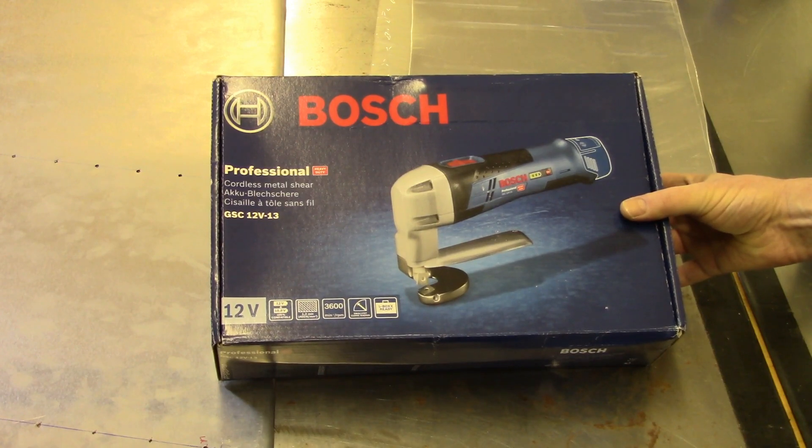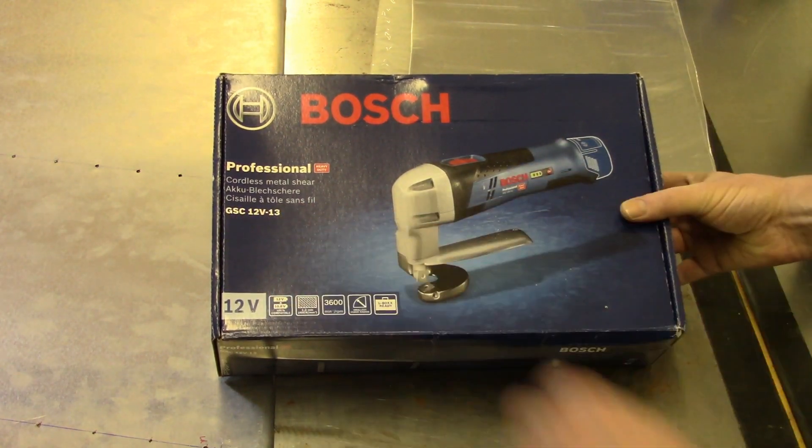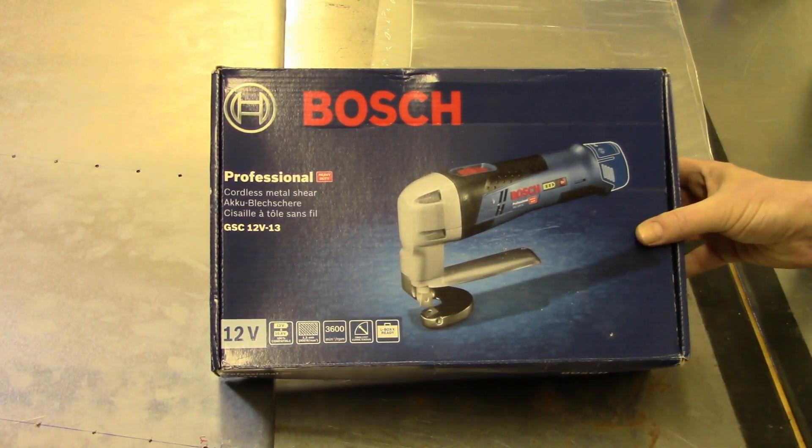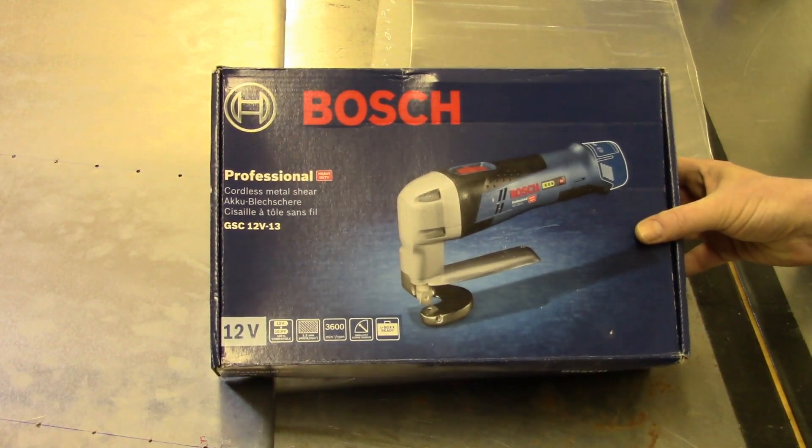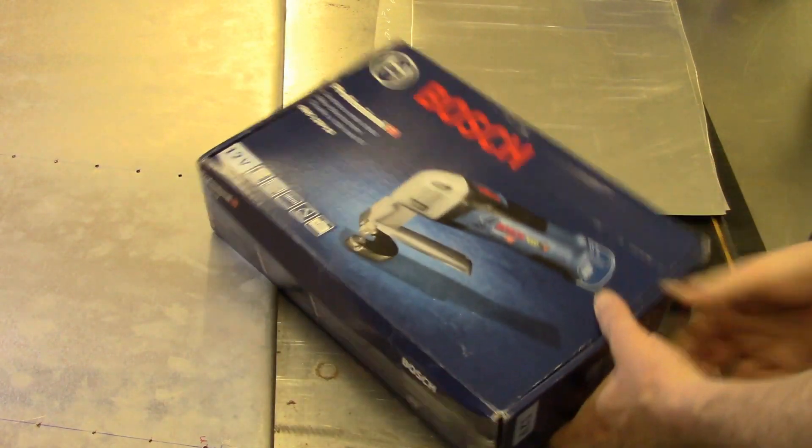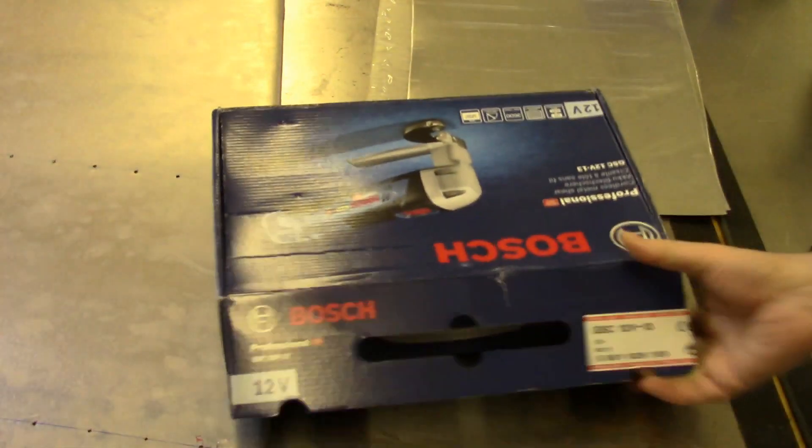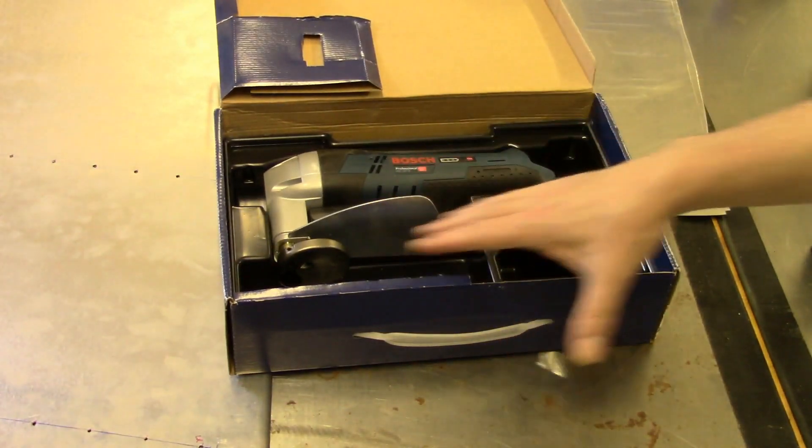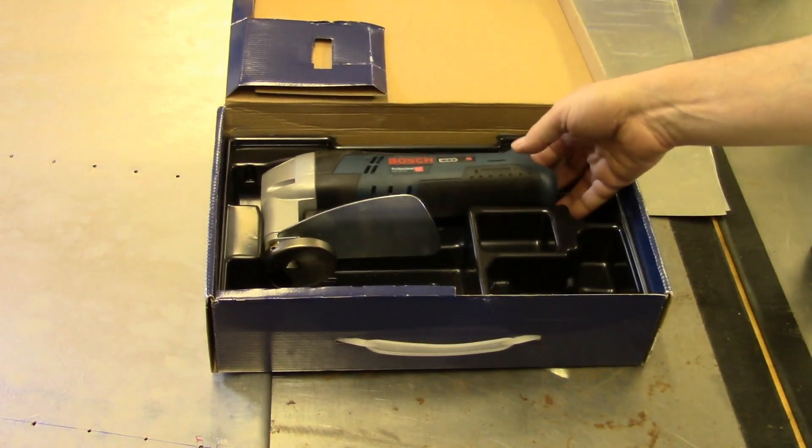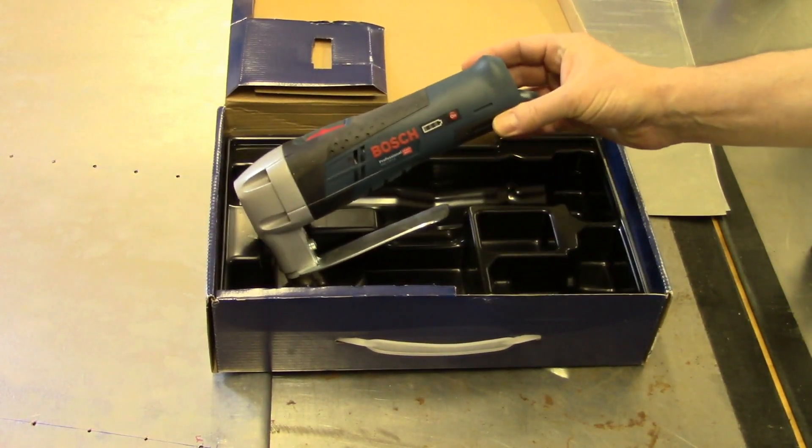It is a Bosch GSC 12V13, and the big feature about this is that it's a cordless metal shear. Now this is just the box it came in. This isn't an original unboxing because I've already been making use of it. This is essentially what you get in the box. The particular one that I ordered did not come with the battery.